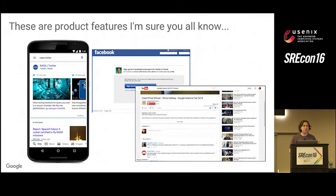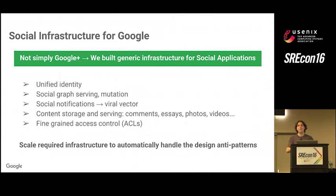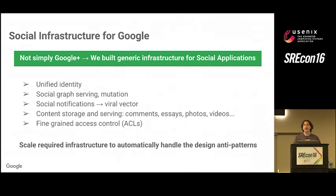These are products I'm sure you're aware of: Twitter, Facebook, YouTube, and Strava — the bicycle riding and running app — where when I log in, I see a list of things that my friends have done, they give me kudos, I give them kudos. The social features of applications are showing up everywhere outside of social networks and within.